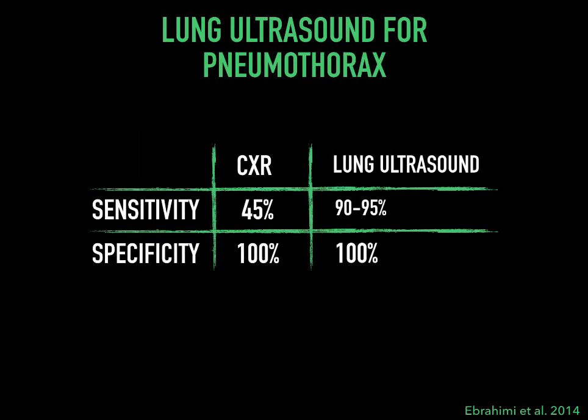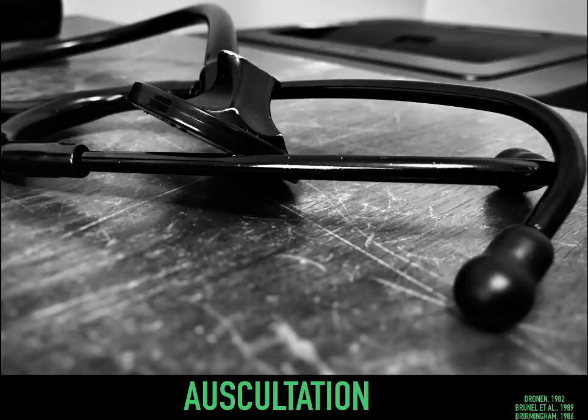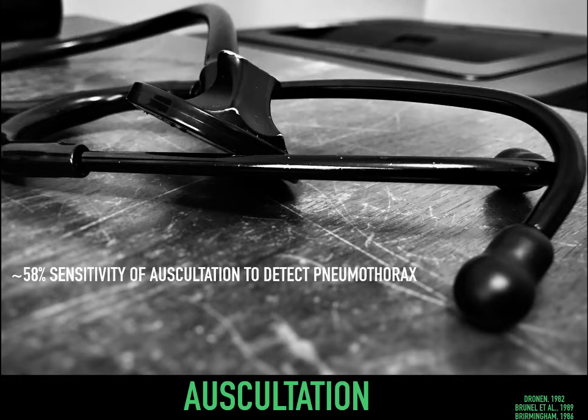For those of you sonophiles who are familiar with ultrasound, you're probably well aware the sensitivity of chest x-ray for pneumothorax is actually quite low in comparison to lung ultrasound. But for those in earlier learning, this is of critical importance as even life-threatening pathology can be missed by conventional radiographs and by clinical exam. Auscultation, in fact, has a 58% sensitivity to detect pneumothorax.